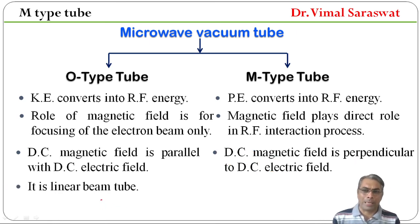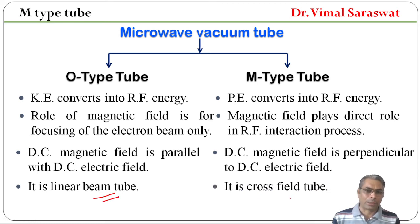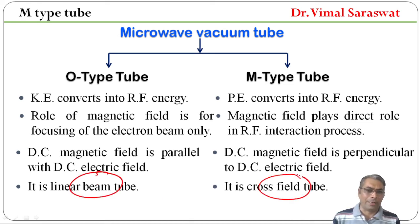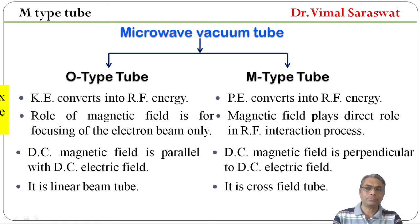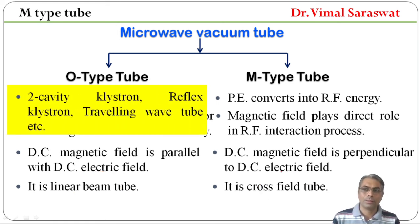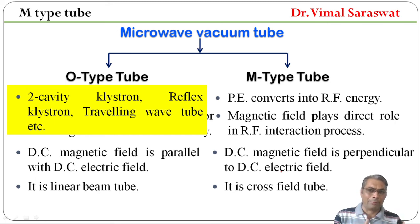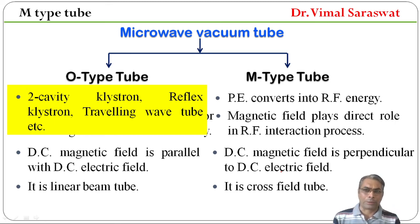O-Type tube is a linear beam tube, whereas M-Type tube is a cross-field tube. O-Type tube में linear beam tube है, जबकि M-Type tube में cross-field tube है. Examples of O-Type tube include two-cavity klystron, reflex klystron, traveling wave tube, etc.